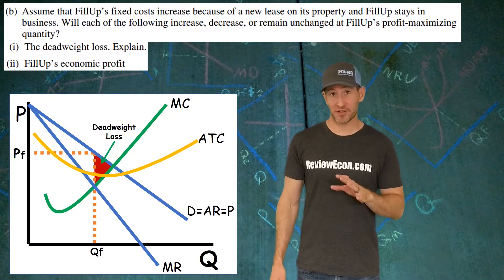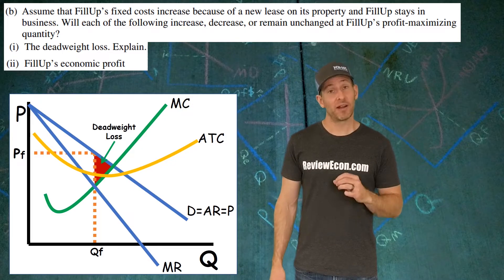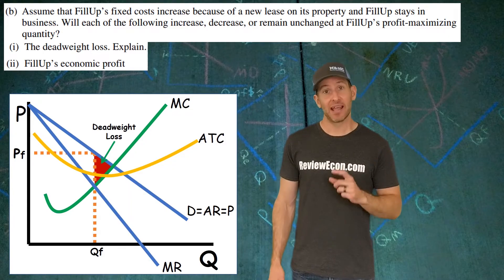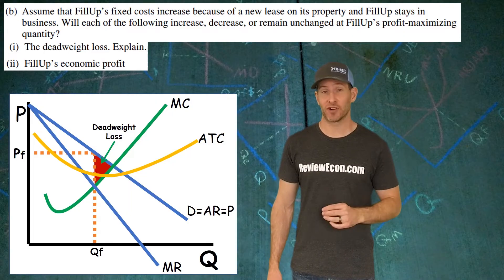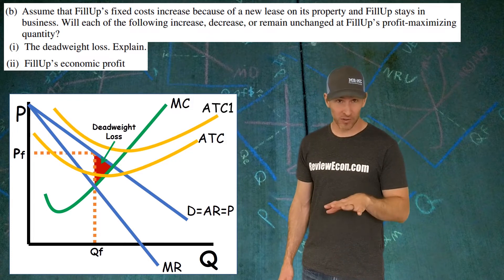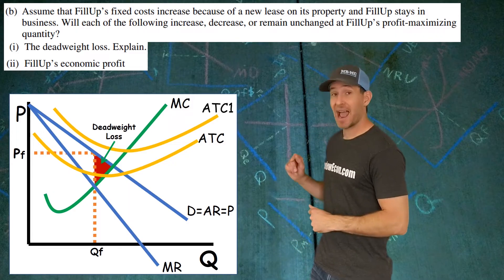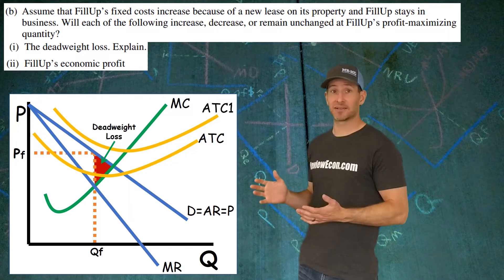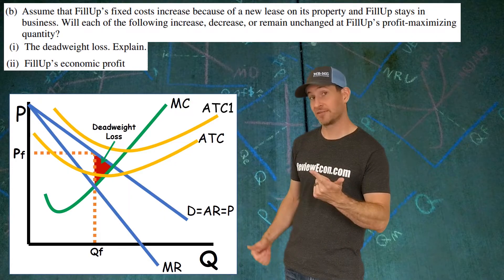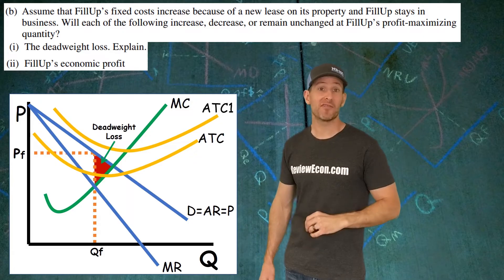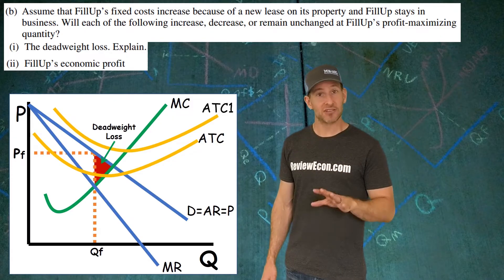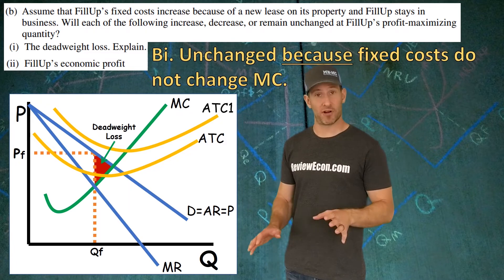In part B, Philip opens a new lease, increasing their fixed costs. For the dead weight loss: increasing fixed costs shifts the average total cost curve upward — that is the only thing it does. The dead weight loss doesn't change because it is based on the allocatively efficient point, the marginal cost, and the demand curve at the profit maximizing quantity. Since the marginal cost didn't change, there is no change to dead weight loss.